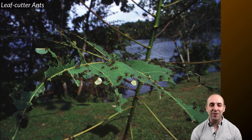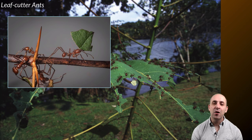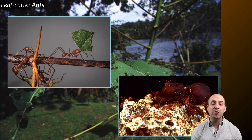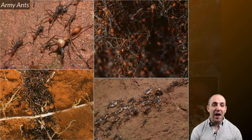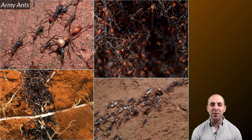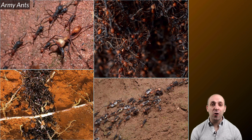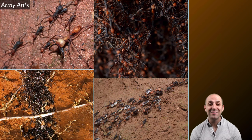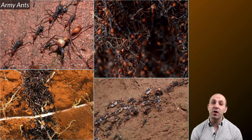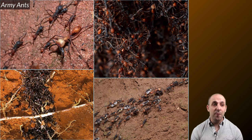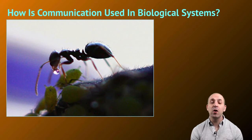Of course, we have leafcutter ants, who cut pieces of leaves and take them back to their nests, where they use them to grow fungal gardens which serve as a food source for the entire colony. And who can forget army ants, who engage in bivouacs, moving across a particular terrain and eating everything that comes into their path. Ants are really cool and they have a lot of different behaviors, and those behaviors are entirely the result of communication — particular chemical communication from the pheromones that the ants produce.